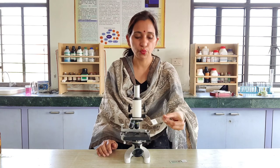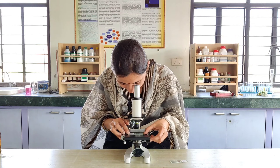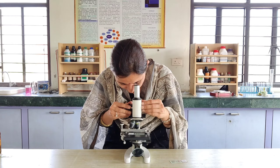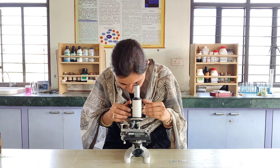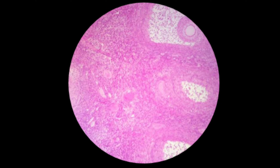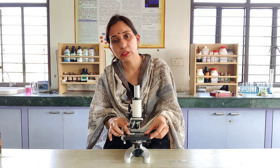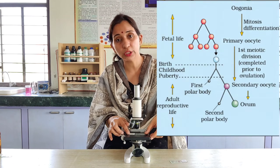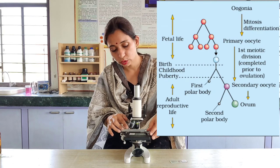Okay, now here you can see these follicular structures which are visible here. These are the follicles which are present in the mammalian ovary, and this process of formation of these follicles is known as oogenesis.